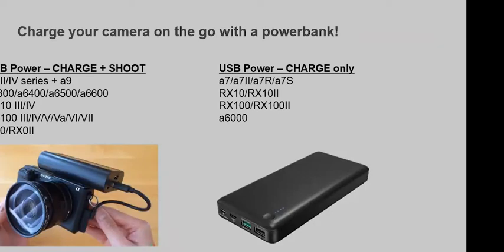Another thing you can do to help your battery situation is to use a power bank. That same power bank you use to keep your phone powered throughout the day can actually be used to charge your battery on the go by connecting it to your camera with a USB cable. If you have a newer camera, you can actually leave the camera on and keep using it while you charge. I had a situation visiting New York at the American Museum of Natural History — my battery was down to about 8% and I'd left my spare batteries back at my buddy's house in Jersey City. I pulled out my power bank, plugged it into my camera with a long cable, and was able to keep shooting while my battery charged.